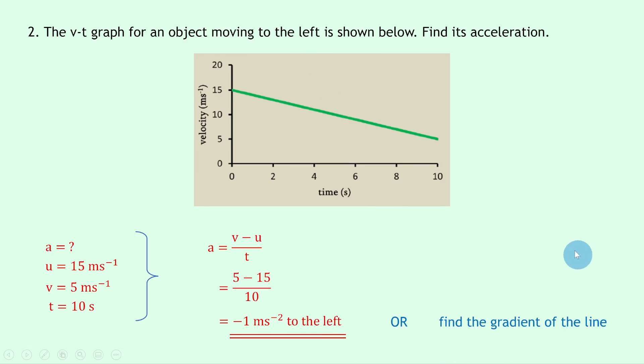Now remember another way you could do this is to find the gradient of the line, and if you do that you should get the exact same answer: minus 1 meters per second squared to the left. That's all for this video folks. I hope you found it useful. If you did, give it a like, subscribe to the channel, and I'll see you in the next one. Take care.